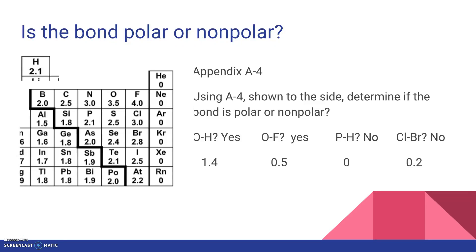Cl to Br is also nonpolar because the difference between the two is only 0.2. So you just find them on the chart, subtract them — if it's 0.5 or greater, it's different enough to be polar; if it's less than 0.5, then it's considered nonpolar.